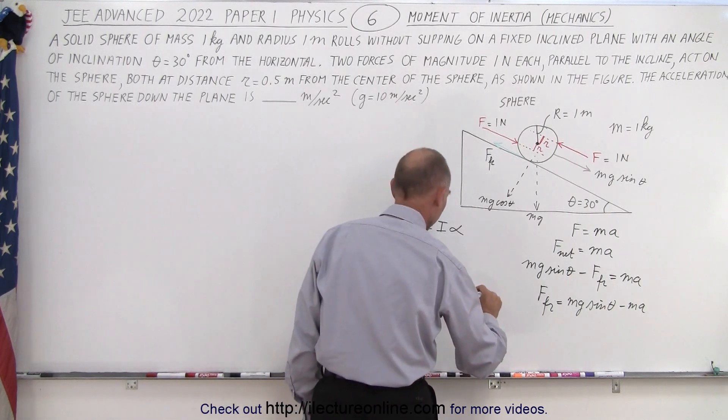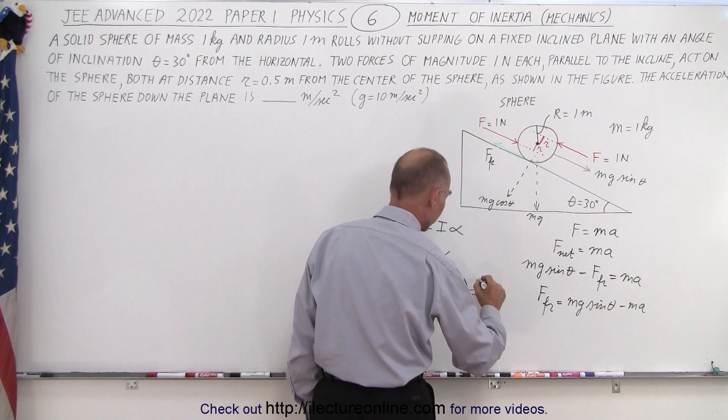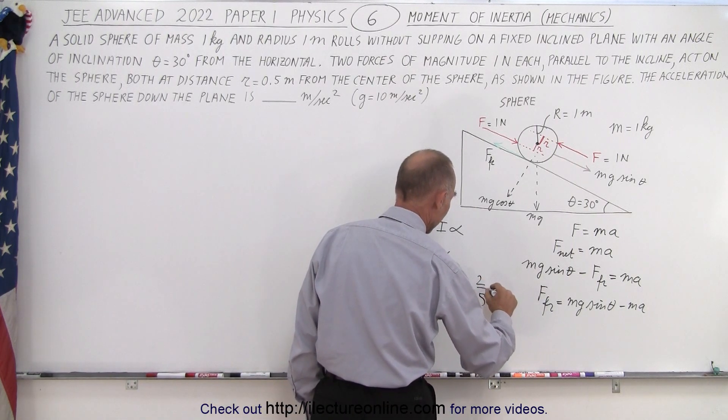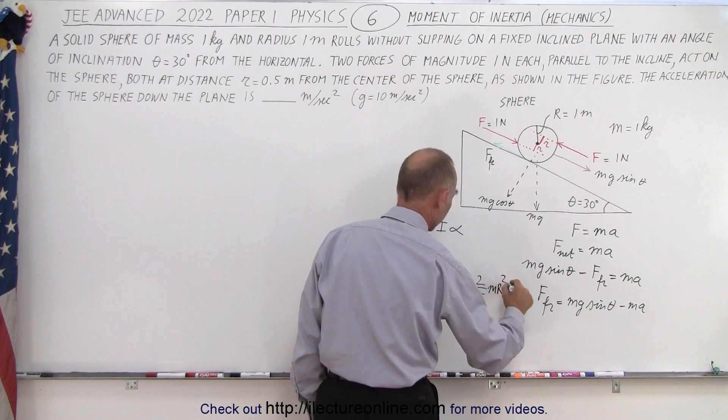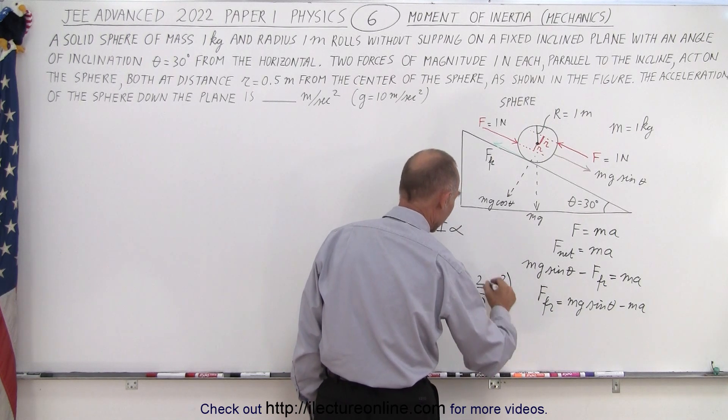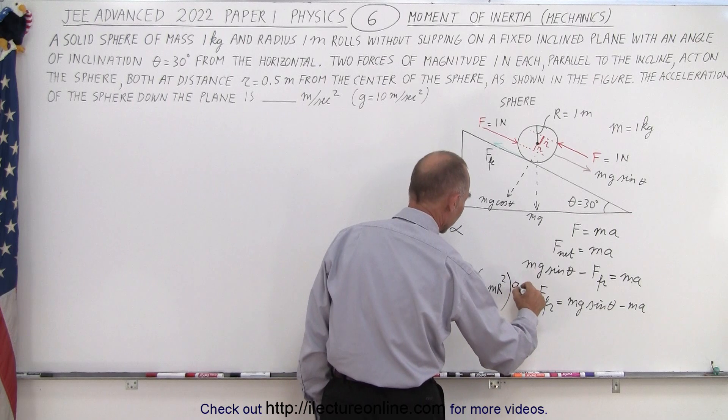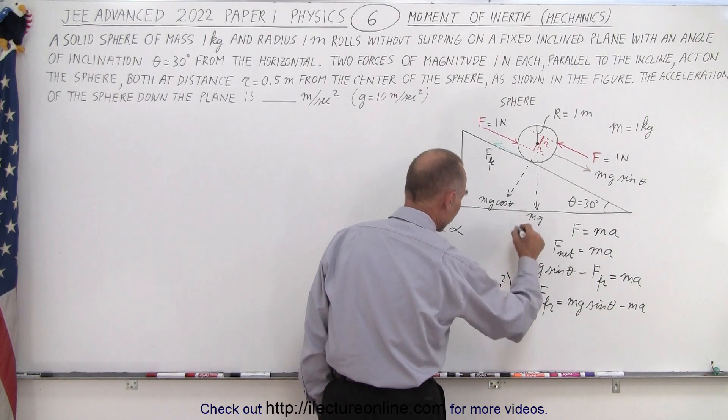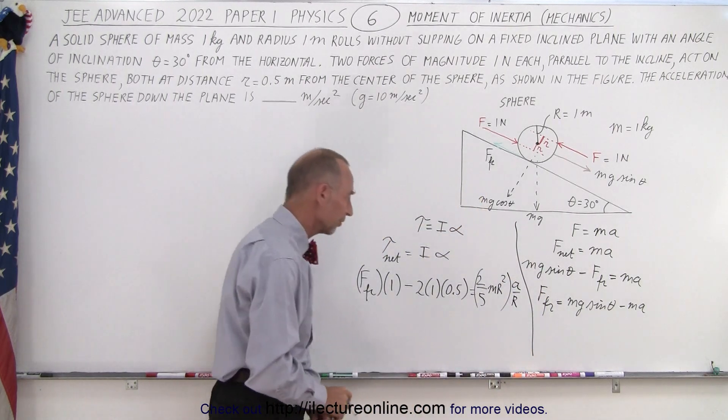That equals the moment of inertia of a solid sphere, which is equal to 2 fifths MR squared times the angular acceleration, which by definition is linear acceleration divided by R. So, make sure we don't get confused there.